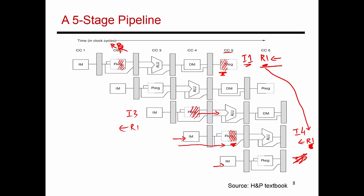Finishing the write in the first half of a cycle and finishing the read in the second half makes it easier to transfer a value between instructions. If register read and register write each took an entire cycle, the consuming instruction would have to start no earlier than cycle five. That's the reason for introducing this half-cycle register read and half-cycle register write assumption. We'll talk more about data dependencies later.